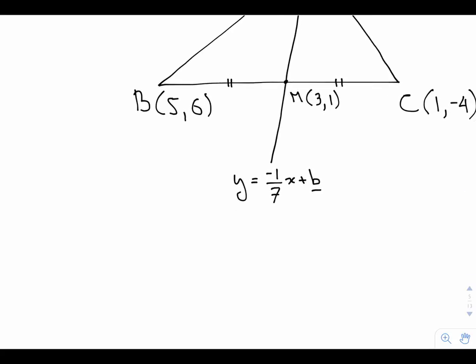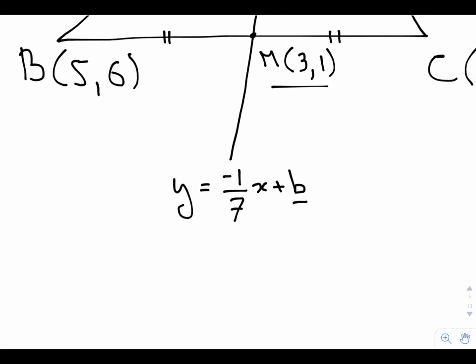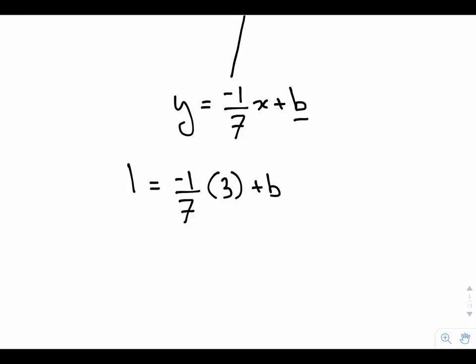So we can pick either one of those and it will generate the same B value. So let's choose the point 3, 1. So for Y I'm going to replace it with a 1 because it's the Y coordinate. And for the X value, I'm going to replace it with a 3. 3 over here, then I have a plus B.